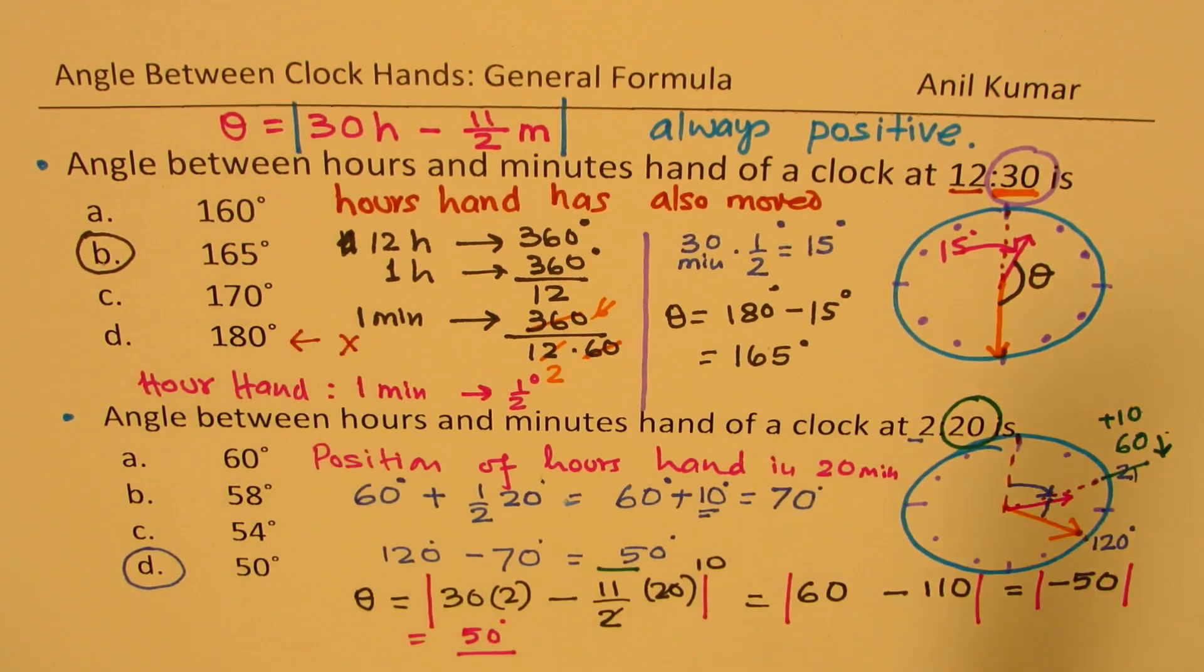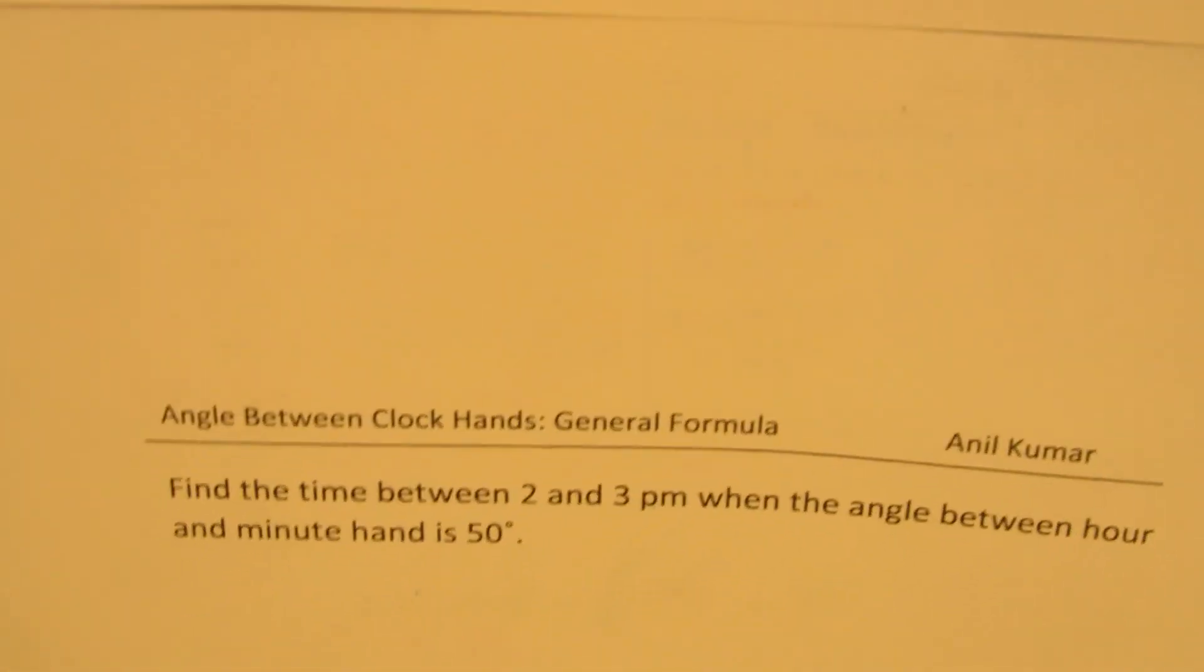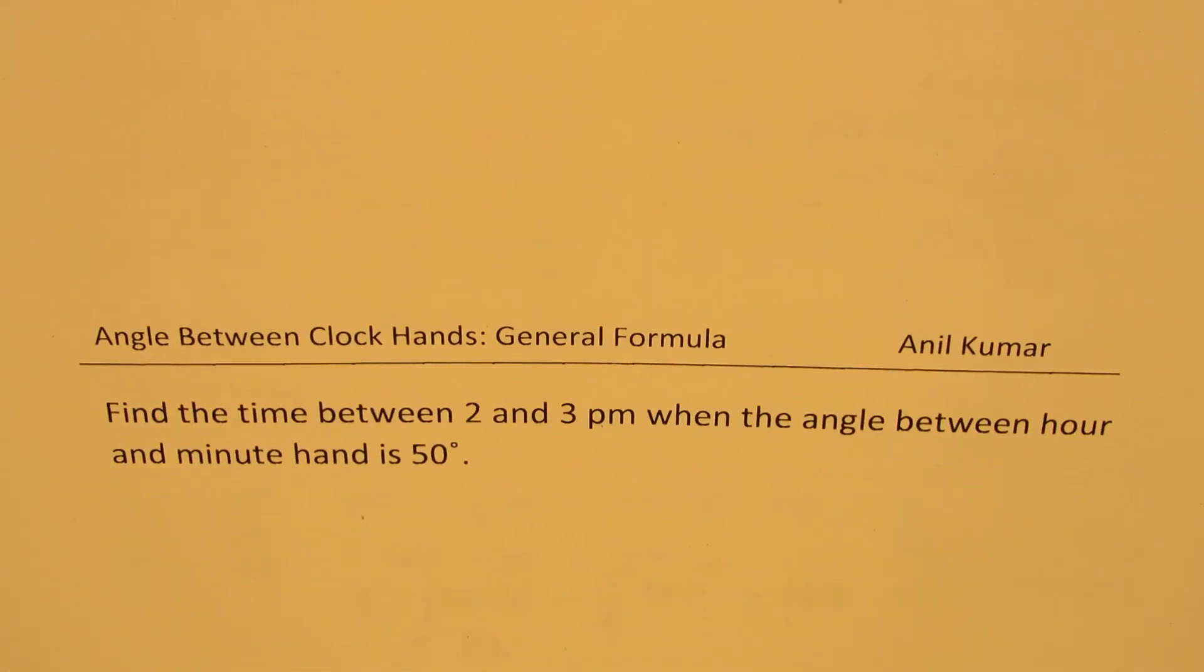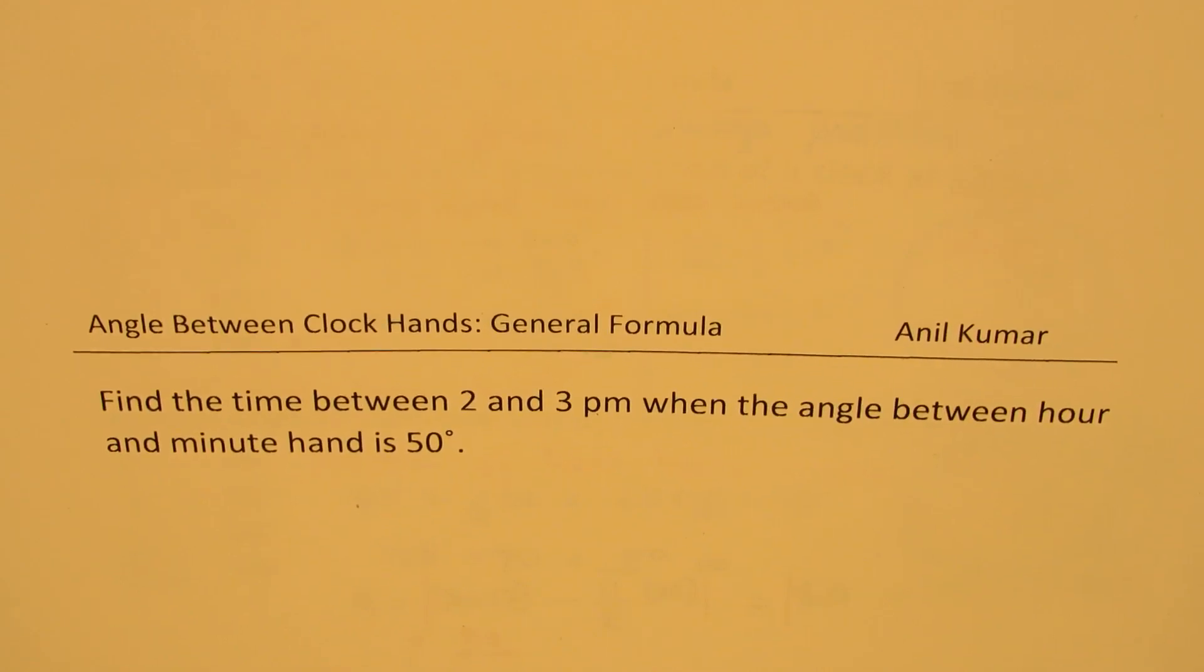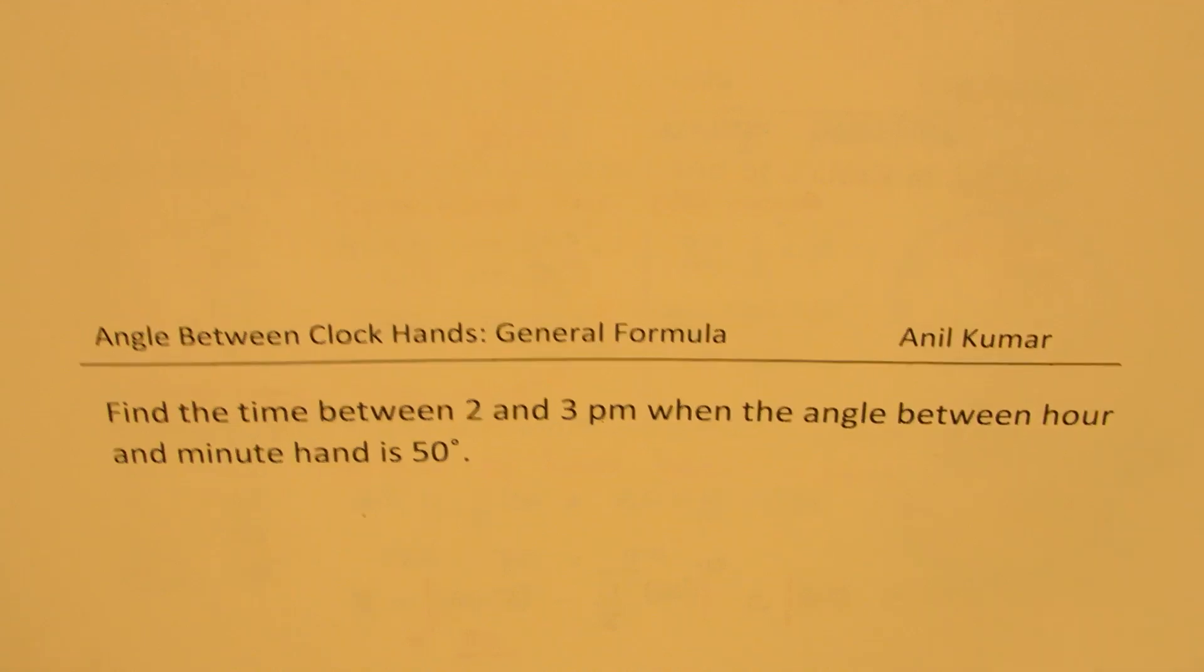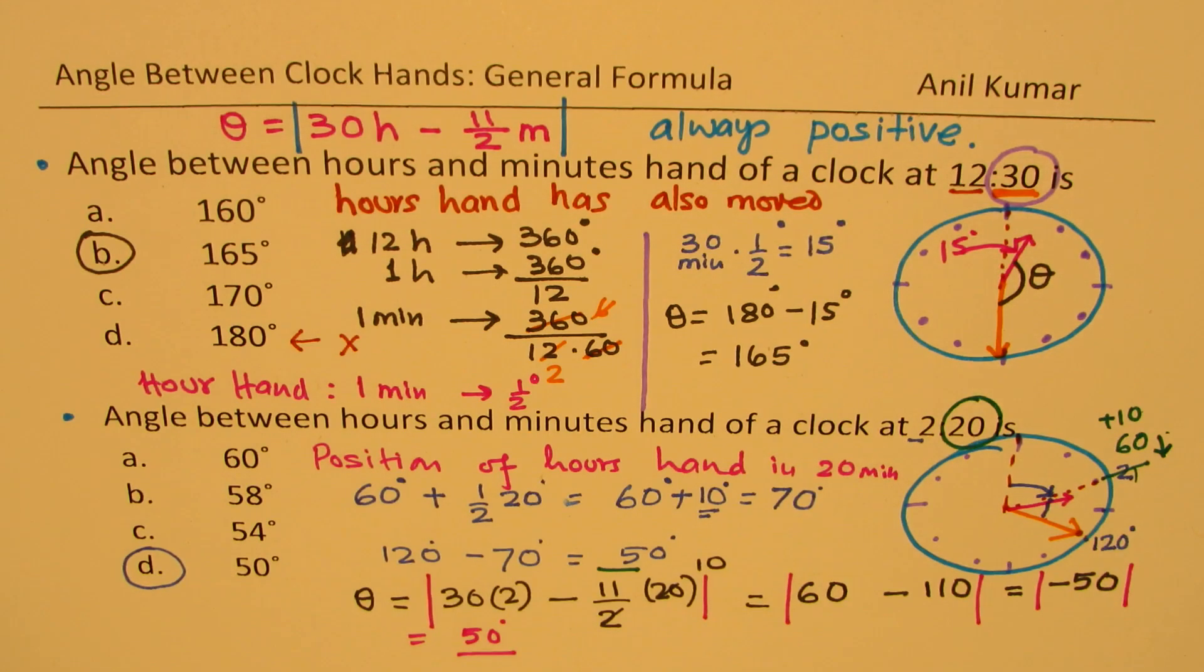So I prefer to use this method. The formula is good to use, especially when you have a question something like this, which is find the time between 2 to 3 p.m. when the angle between hour and minutes hand is 50 degrees. So now, I would like you to answer this question, which is very interesting.